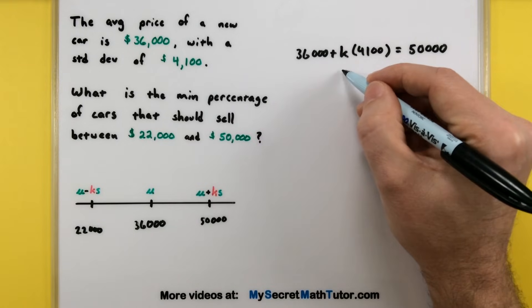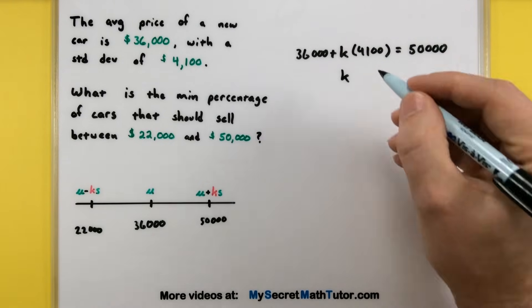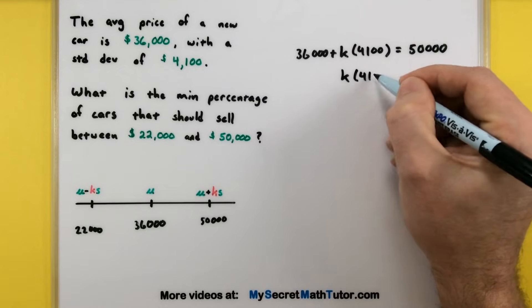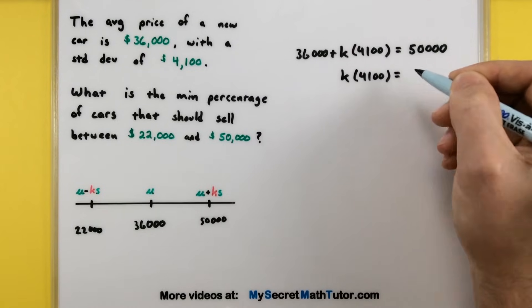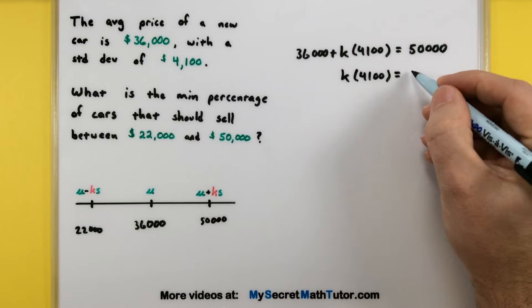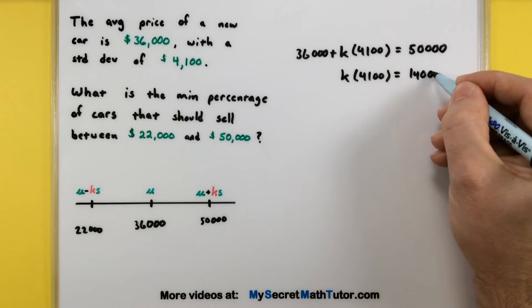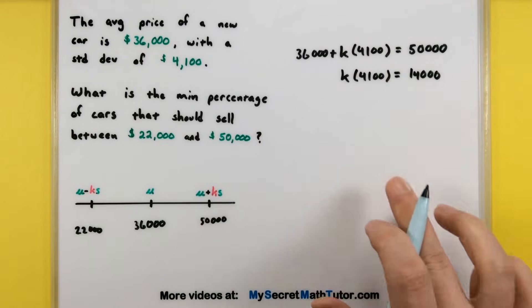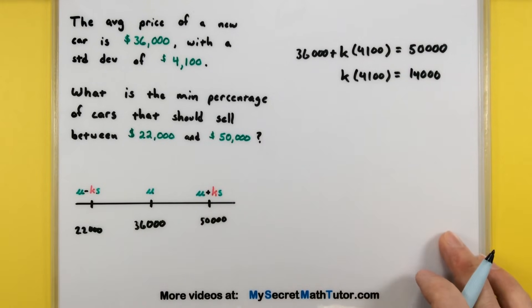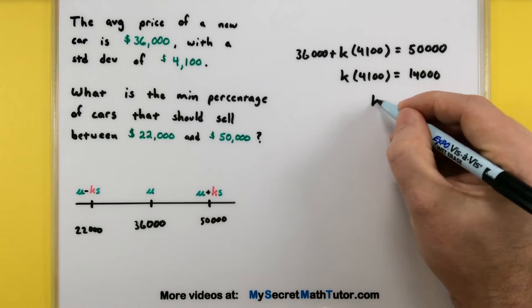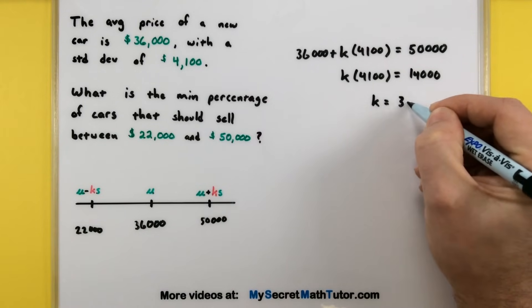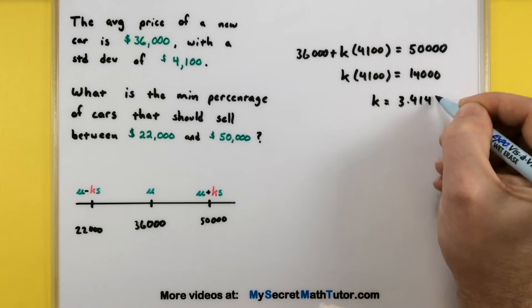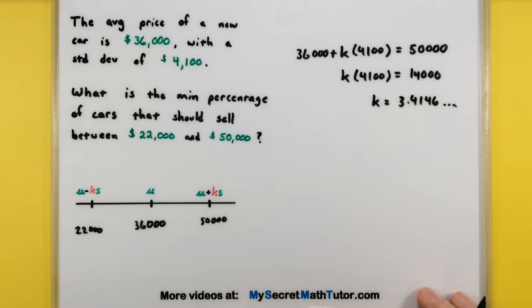So the first thing we can do is subtract 36,000 from both sides. Let's see, and that'll give us 14,000. Now we want to divide both sides by the 4,100. And it looks like a little bit more than three standard deviations is what this range is.